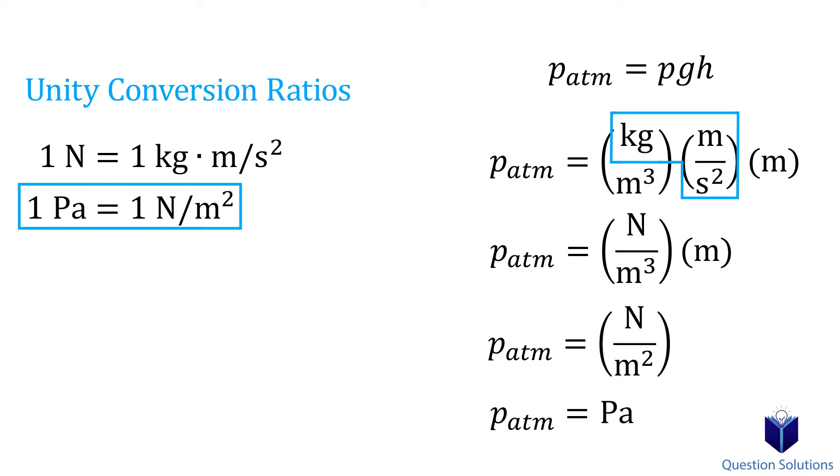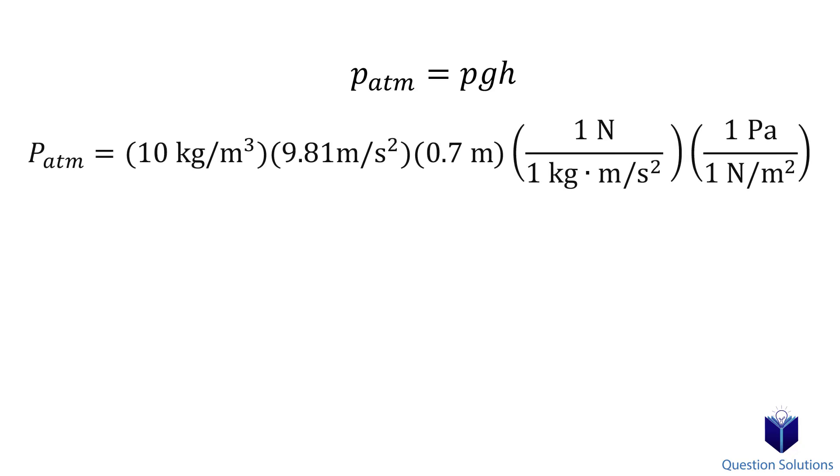Now some books will write this process a bit differently. Here I've chosen arbitrary values to showcase an example. This is the same thing, but just written out in one line. Notice how the unity conversion ratios get cancelled out, leaving us with just pascals.